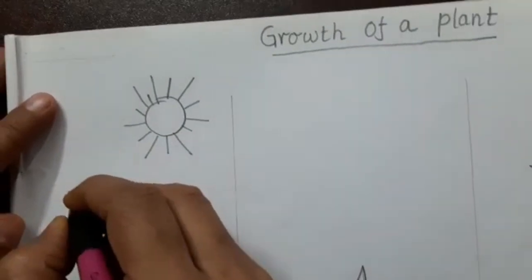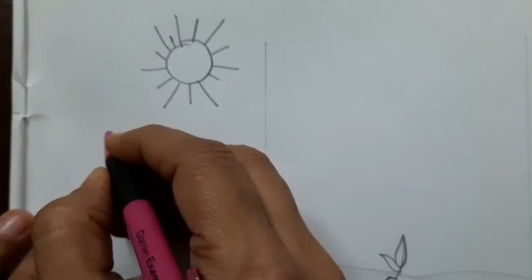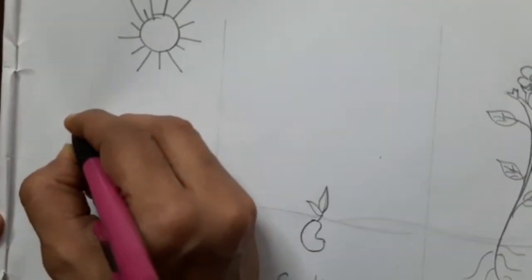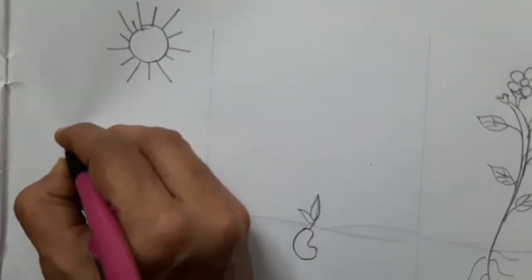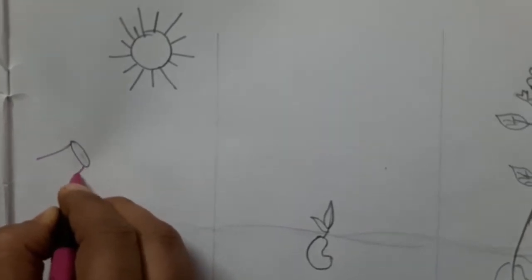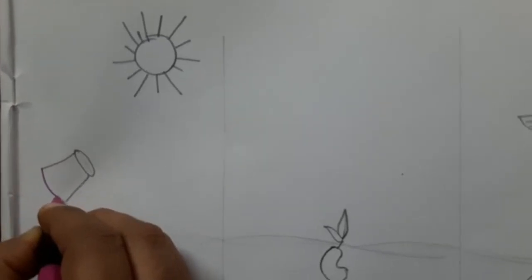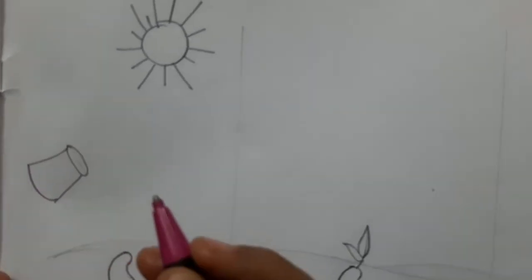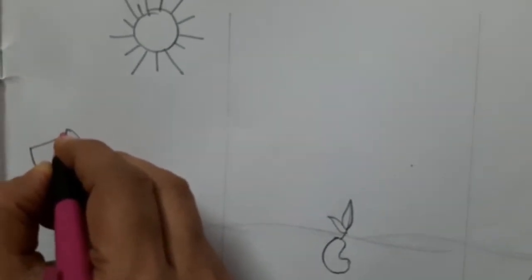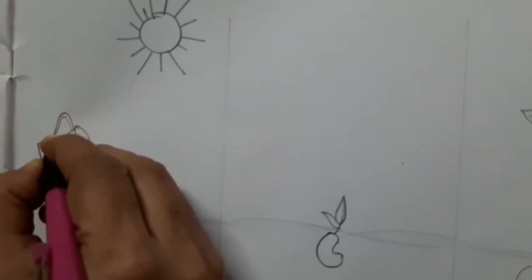And here we can draw a watering can. Children have to draw a watering can. See, draw one oval shape. Now two little slant lines, and we are going to join it in a curve shape. Now here we have to draw a handle.